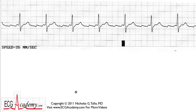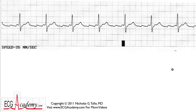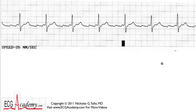This rhythm strip is something I found on the telemetry unit, and it's a very common strip — a common arrhythmia — so I listed it as basic. But it doesn't exactly look like the typical textbook picture of this particular arrhythmia. That's why I thought it would be fun to go through it step by step and teach you how to recognize this arrhythmia while you're looking at strips on the units.